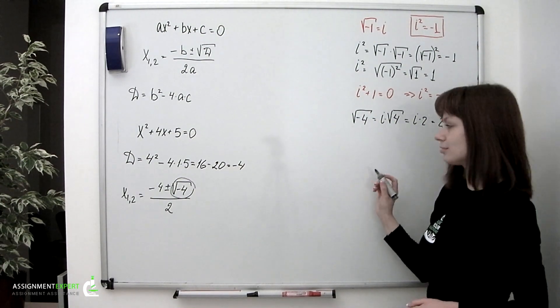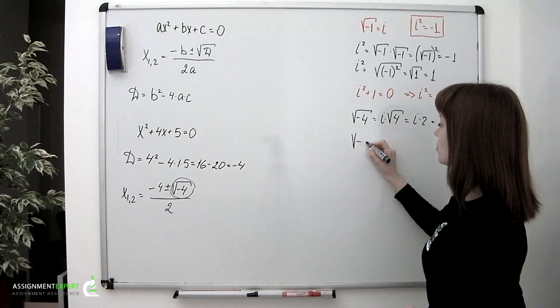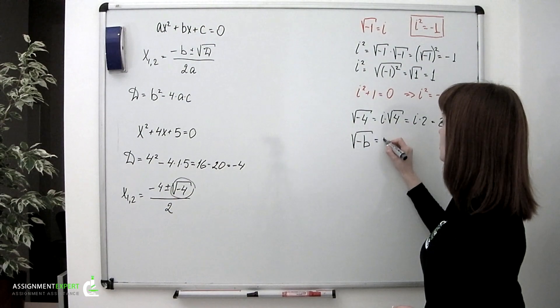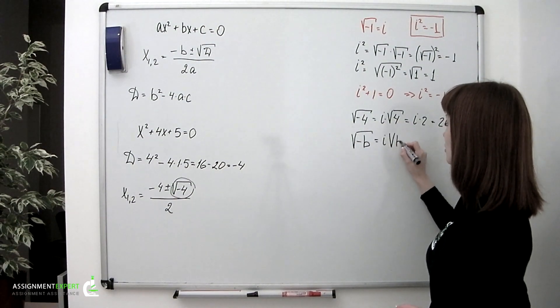Or in general, each time we have square root of negative b, where b is a positive number, it should be replaced with i times square root of b.